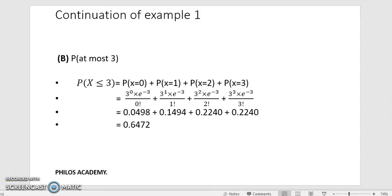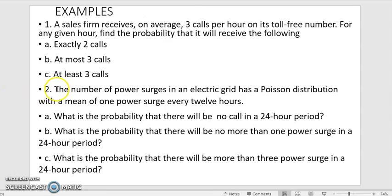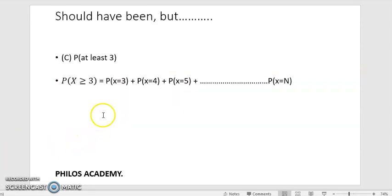Let's go to question C. Question C says we should find the probability of at least 3 calls. When we say at least 3, at least 3 means that X is greater than or equal to 3. Meaning minimum power is 3.